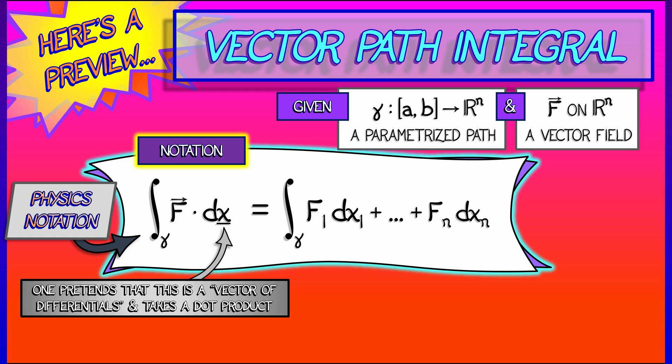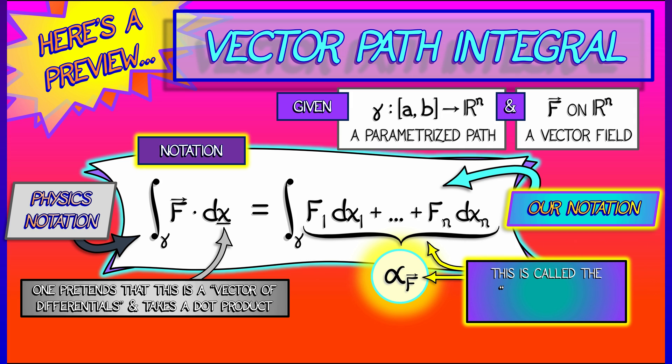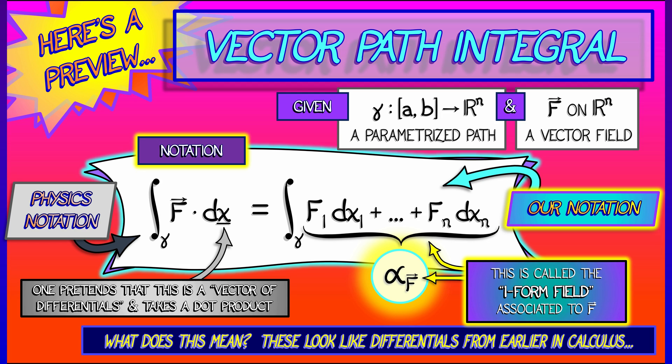But for now, what I want to emphasize is that that integrand is something new. This is something we're going to call alpha_F, the one form field associated to F. Now, what is that? What does that mean? These look like the differentials that you learned about earlier in calculus, but it's going to take some time to tease out exactly what this is and means.